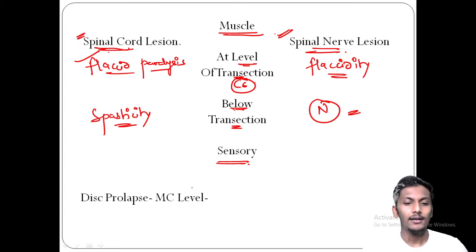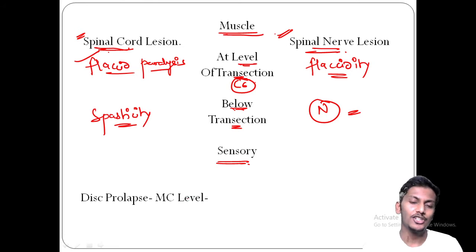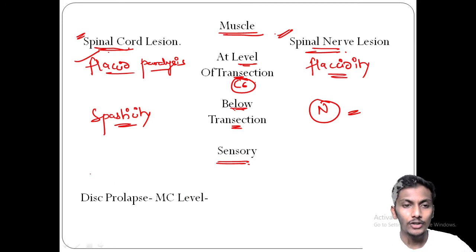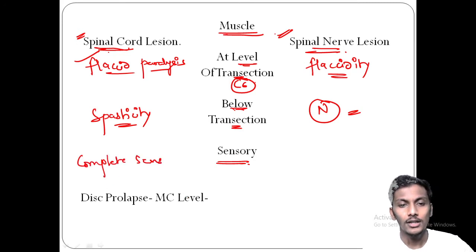Checking the sensory component: in cases of spinal cord lesion, there is complete sensory loss from the level of transaction and below. In cases of spinal nerve lesion, there is sensory loss only in the distribution of the specific nerve involved.